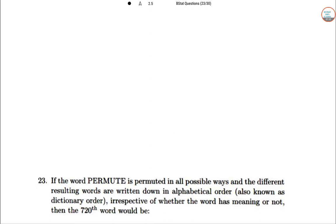Next is 23. It's about a permutational structure. If the word PERMUTE is permuted in all possible ways, and the different resulting words are written down in alphabetical order, also known as dictionary order, irrespective of whether the word has meaning or not, then find the 720th word.